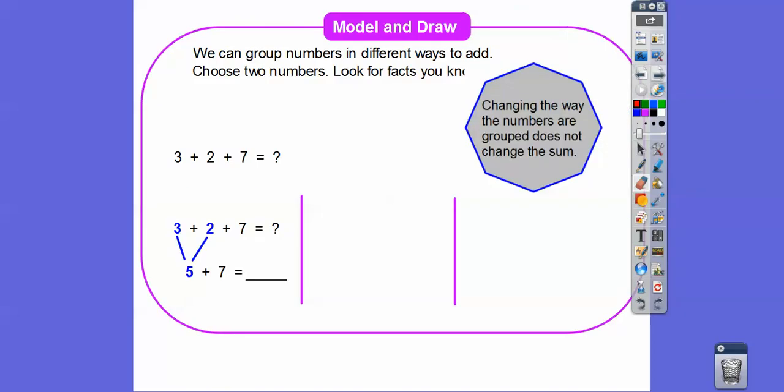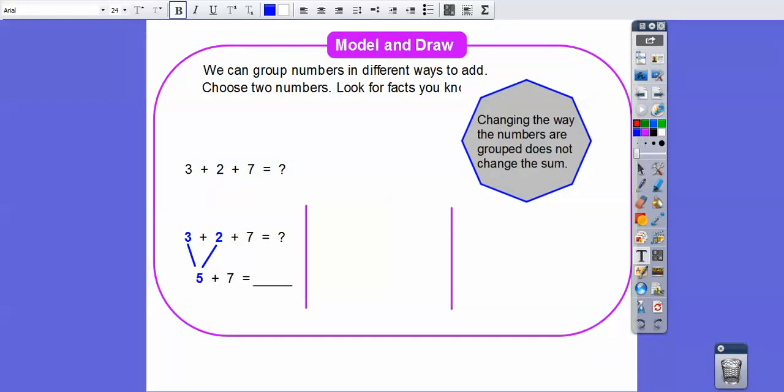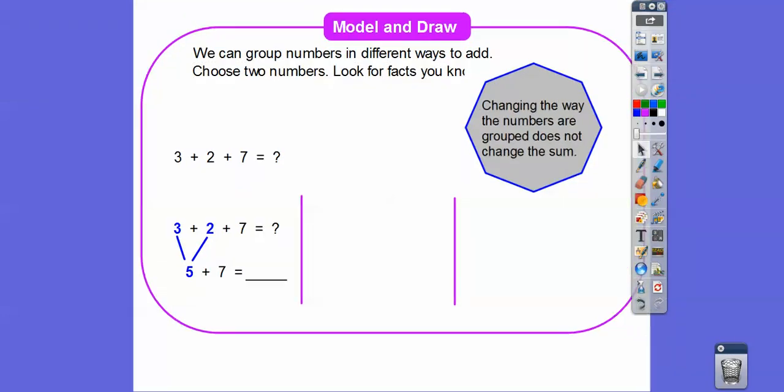Okay, we can group numbers in different ways to add, and so we can choose two numbers and look for facts that we know. Hmm, that got kind of blocked off right there. Facts that we know. That's a picture right there. It just got blocked off. That's okay. All right, so here we have three plus two plus seven.